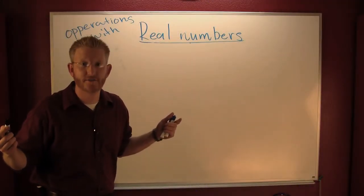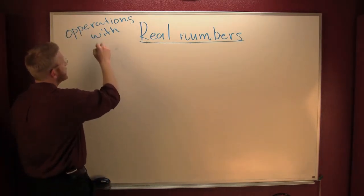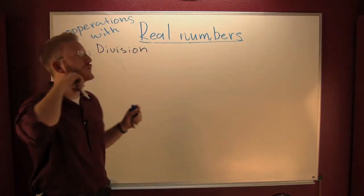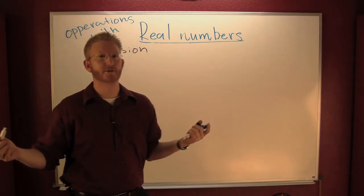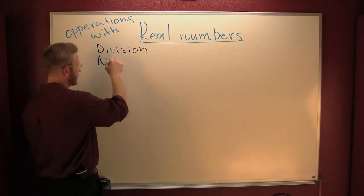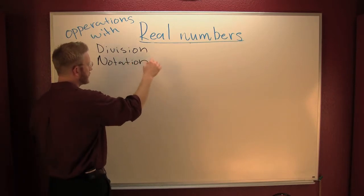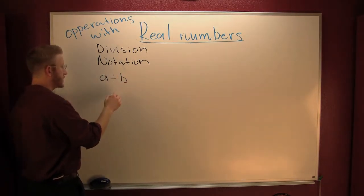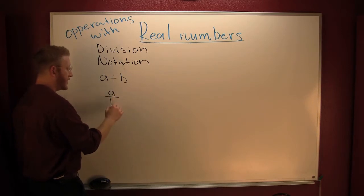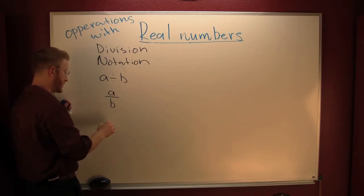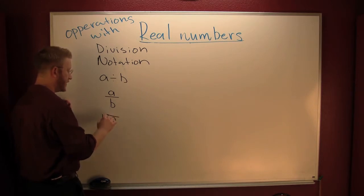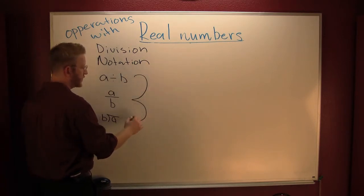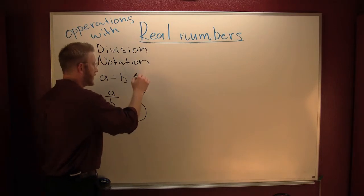Let's spend a bit of time on division — D-I-V-I-S-I-O-N. Let's talk about some notation first. A divided by B is the same thing as A divided by B, which is the same thing as A divided by B. These three ways are all identical — they're different ways of writing things.